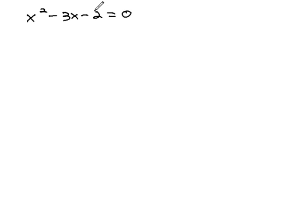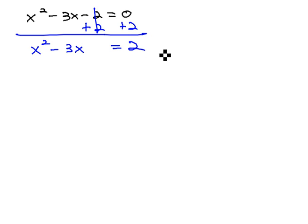First, we need to separate the number or constant from the variables, and then get rid of anything in front of x squared. To separate the constant from the variables, we're going to add 2 to both sides. That way, the variables are on the left, x squared minus 3x, and the numbers are on the right, equals 2.